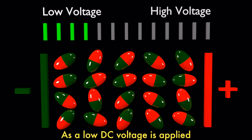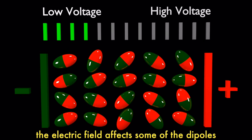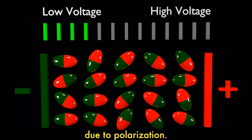As a low DC voltage is applied, the electric field affects some of the dipoles due to polarization. The dipoles will start to align themselves parallel to the electric field. This alignment of dipoles with the electric field decreases capacitance.